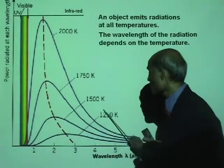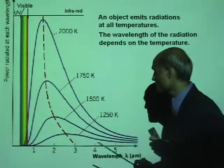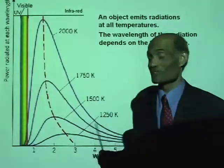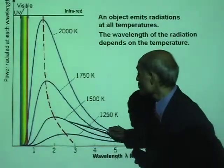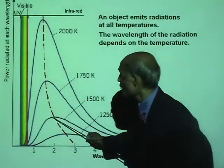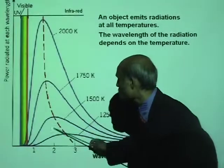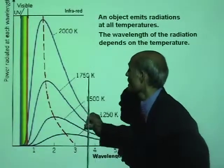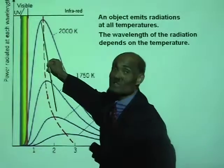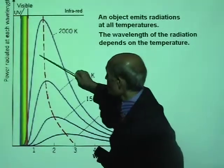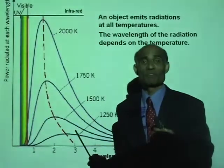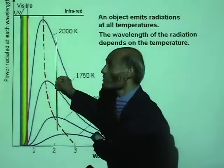At a temperature of 1,250 Kelvin, most of the waves are microwaves. As you increase the temperature to about 1,500 Kelvin, most of the radiations will be about 2 micrometers. As you increase the temperature to about 2,000 Kelvin, most of the radiations will be about 1 micrometer. As the temperature increases, the wavelength of the most prominent radiation becomes shorter and shorter.